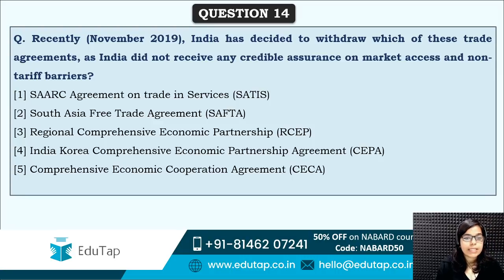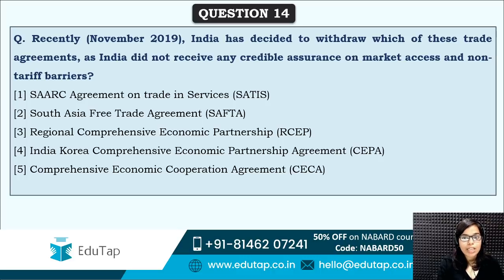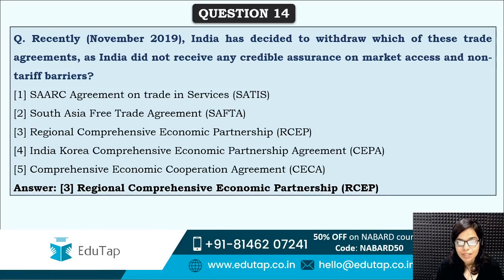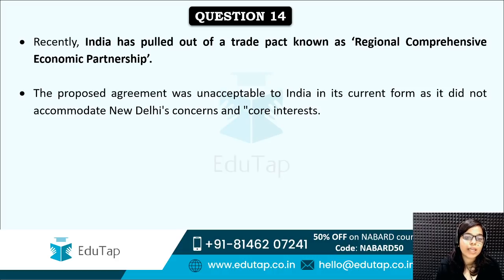Next: India has decided to withdraw from which of these trade agreements, as India did not receive any credible assurance on market access and non-tariff barriers? This was very much in the news — an easy question if you have read current affairs properly. The correct answer is option three — RCEP. India has withdrawn from RCEP, the Regional Comprehensive Economic Partnership, because the proposed agreement was unacceptable in its current form.